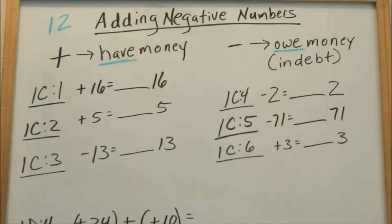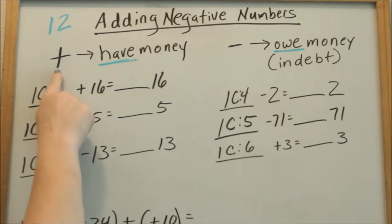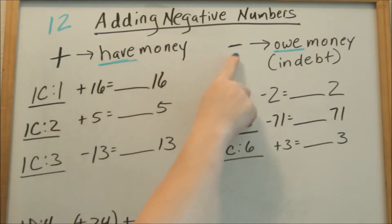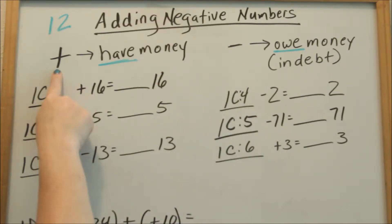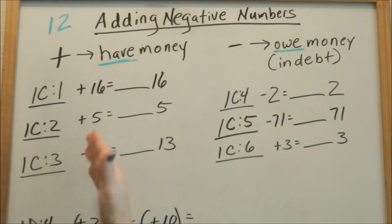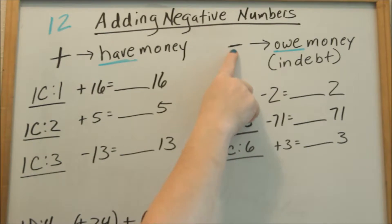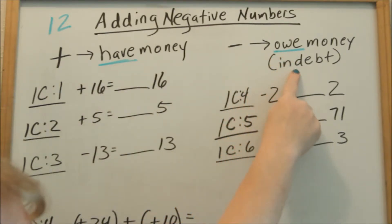Now you're going to start seeing numbers with a sign in front of them — a plus sign meaning positive, or a subtraction sign meaning negative. If you have a positive number, this means you have money. I always like to use money for positive and negative numbers. If you have a negative sign in front of your number, that means you owe money or you're in debt.